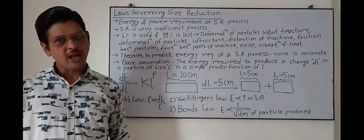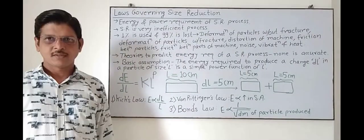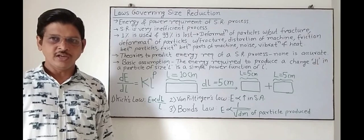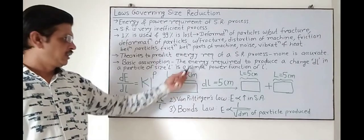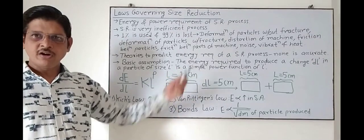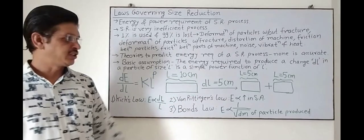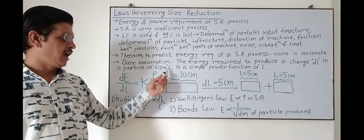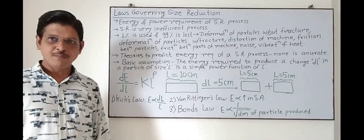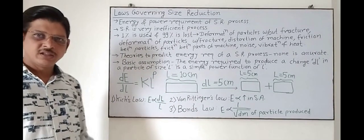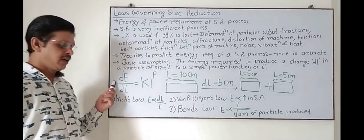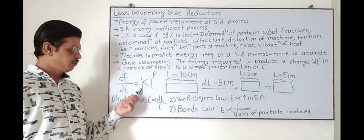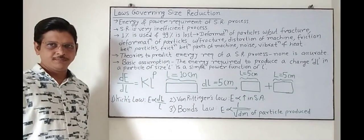Many theories and laws have been given to predict the energy requirement of the size reduction process, but none is accurate. The basic assumption of all these laws is that the energy required to produce a change dL in a particle of size L is a simple power function of L, that is: dE/dL = k × L raised to power P.